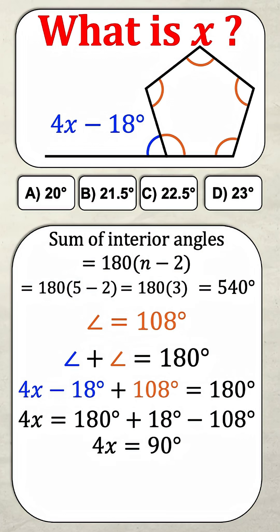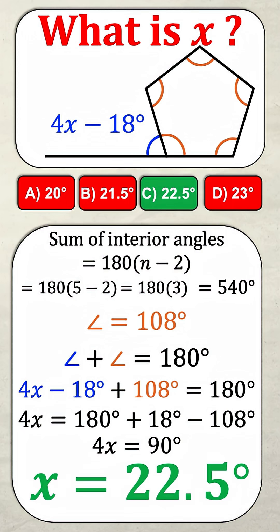And now dividing both sides by four, I'm going to get x equals 22.5 degrees. Did you get this one right? Let me know in the comments.